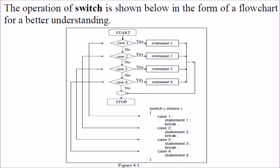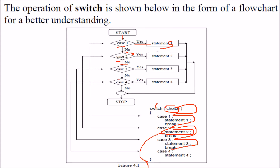The operation of switch works like this: you start with a number of cases. If the case matches, the statements are executed — you don't need to put any braces. You can write any number of statements after the case. Otherwise we go to case 2, case 3, case 4, and if nothing matches, we go to default. There is no necessity to write default. Whichever case matches, the corresponding statements are executed and you come out of the switch.